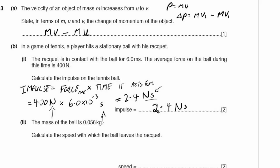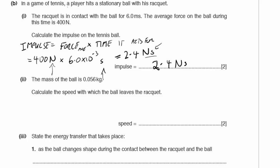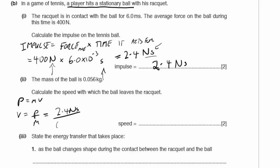Part B2: the mass of the ball is 0.056 kg. Calculate the speed with which the ball leaves the racket. The ball was stationary, so any change in speed equals the final speed. Velocity = momentum ÷ mass = 2.4 newton seconds ÷ 0.056 kg = 43 metres per second.